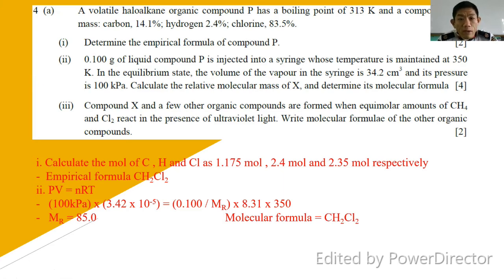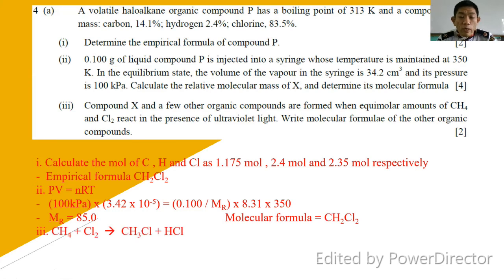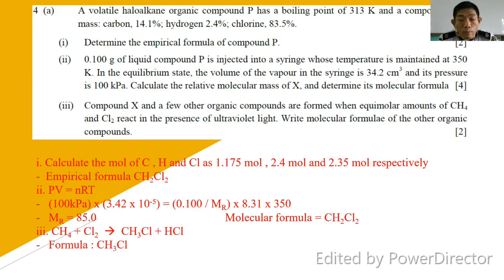Part three: compound X and a few other organic compounds are formed when equivalent amounts of CH4 react in the presence of sunlight — this is a free radical substitution reaction. Many possible products can be formed, including chloromethane, trichloromethane — all are possible. If you write the correct by-products, you will get the desired marks.